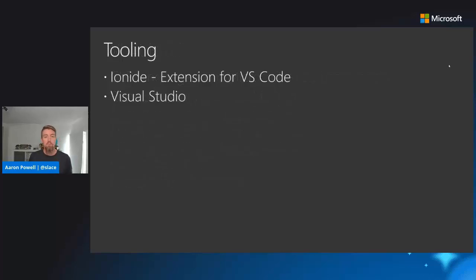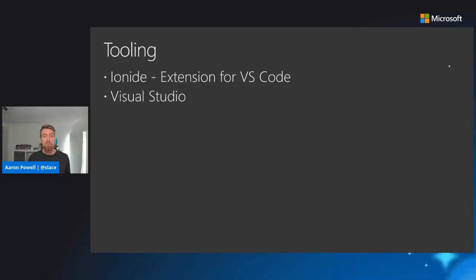When it comes to building applications with F#, Visual Studio obviously has first-class support. There's also an open-source project from the community called Ionide — which I'll actually be using for the demo shortly — for VS Code. If that's your preferred editor, it's a cross-platform editor and Ionide is the way to do F# development there. Ionide also has support for other editors like Sublime and Vim, though I have little experience with those.